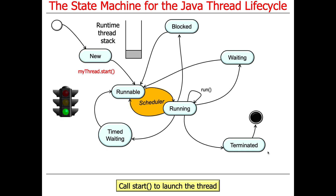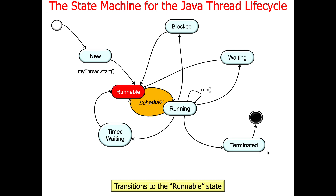When you start the thread — when you say myThread.start() — that sets the wheels in motion. Calling Thread.start() will create a runtime thread stack, typically managed by the underlying operating system kernel. So new myThread puts it in the NEW state, and myThread.start() creates the runtime stack, which then transitions us to the RUNNABLE state.